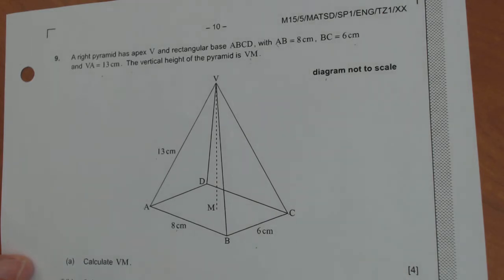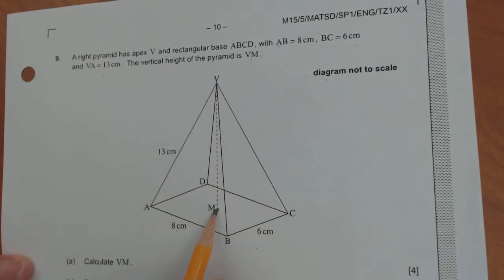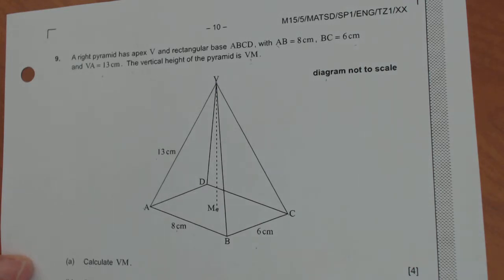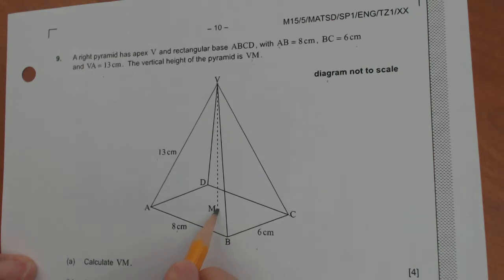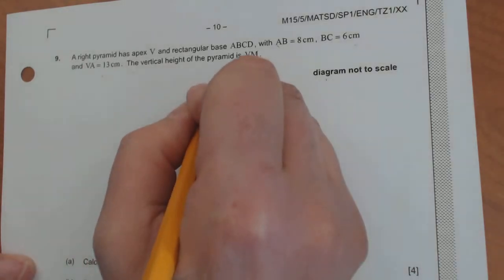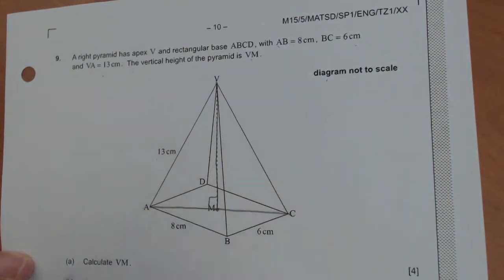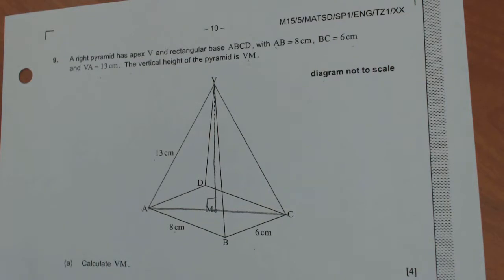So let's see what they need first. Calculate the distance between V and M. So they want this vertical height, the distance between V and M right here, this dotted line, how tall the pyramid is. So this reminds me of A squared plus B squared. So we have this triangle here.